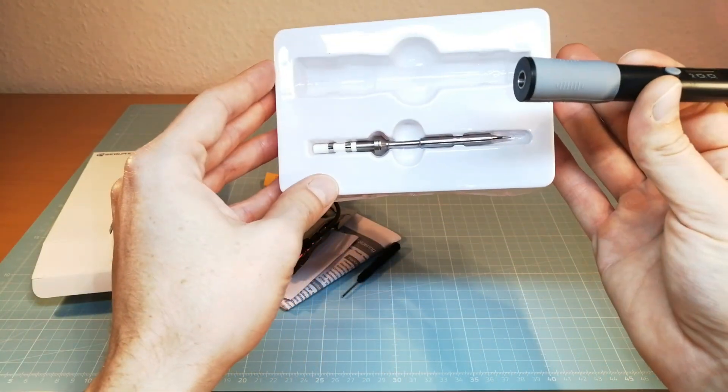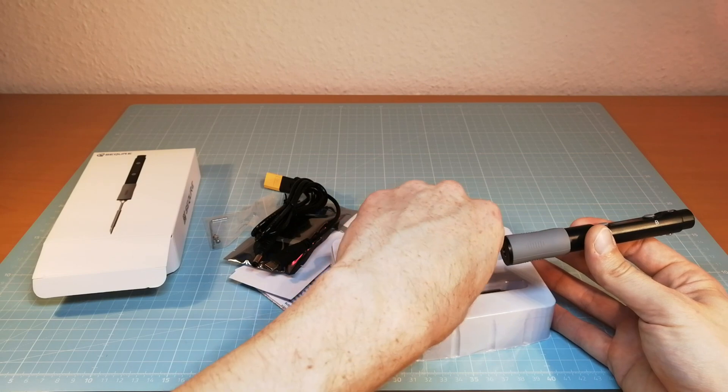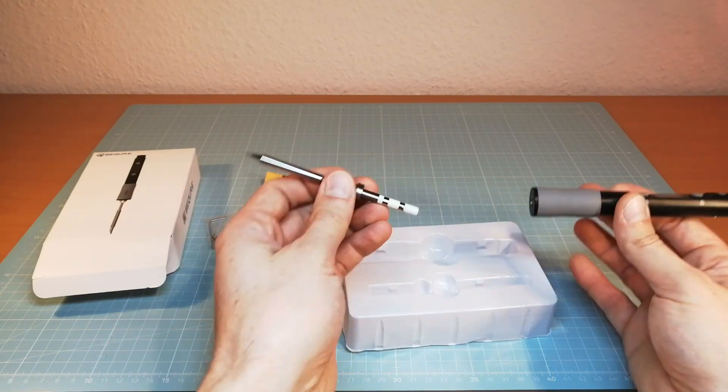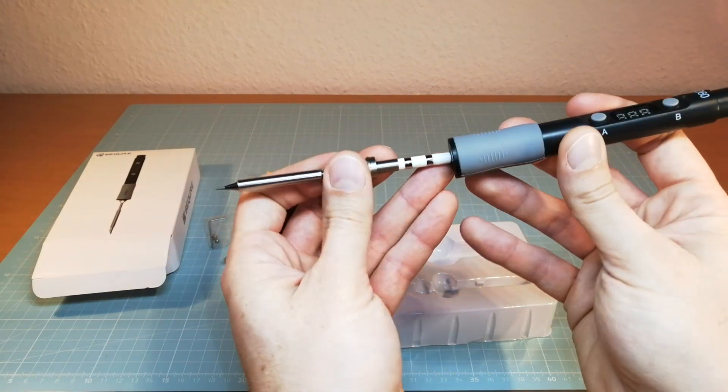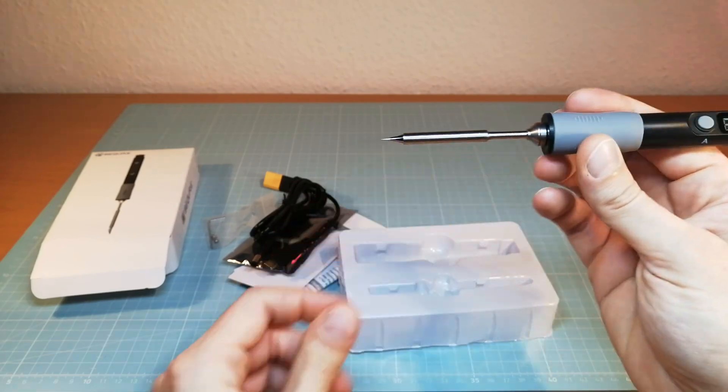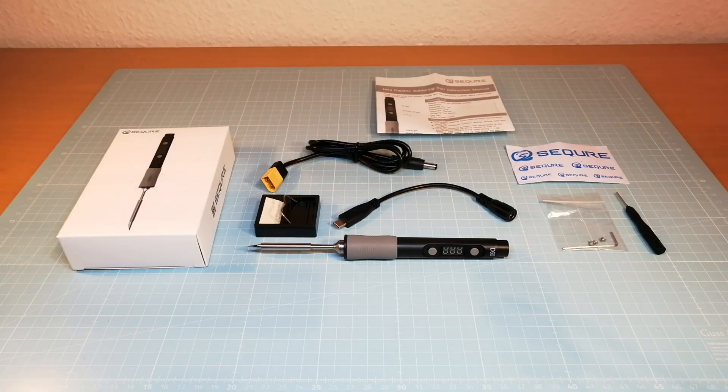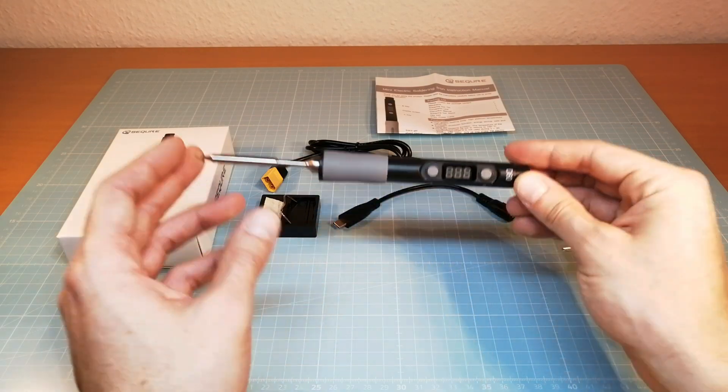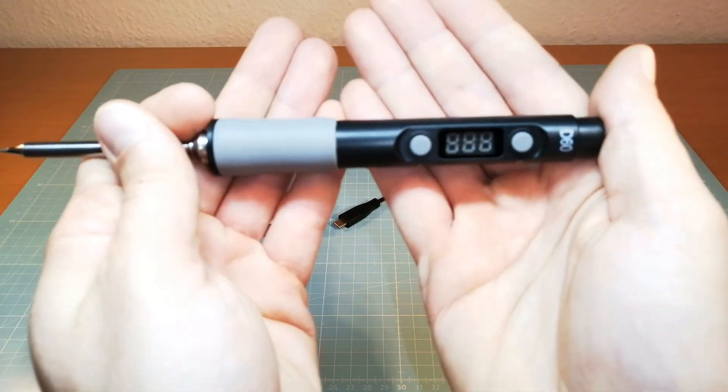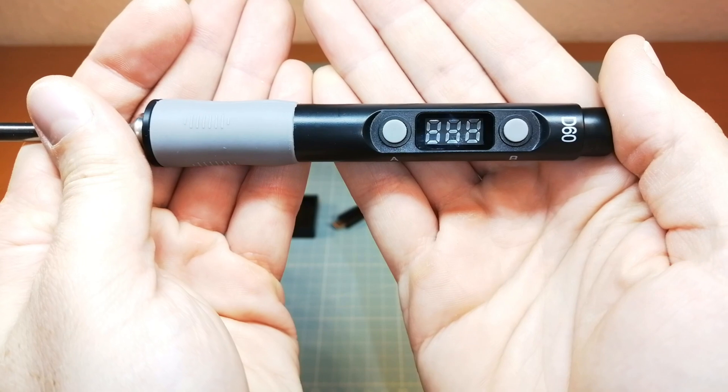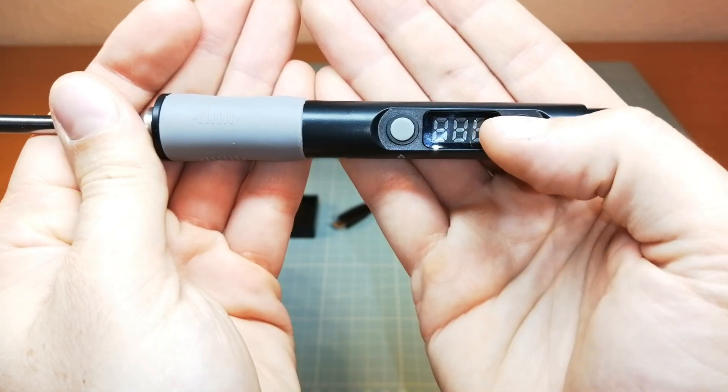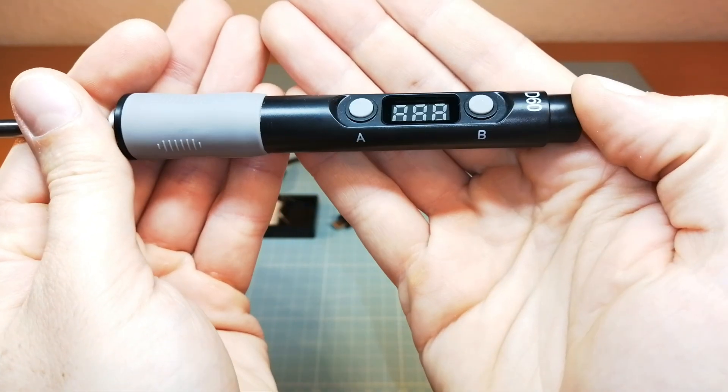We can easily put in the soldering iron tip into the Secure SGD60B soldering pen to put the soldering iron together. The Secure SGD60B comes with two menu buttons for changing the working temperature and even for setting up a sleep time in order to regulate down the temperature to only 100 degrees when the soldering pen isn't in use.